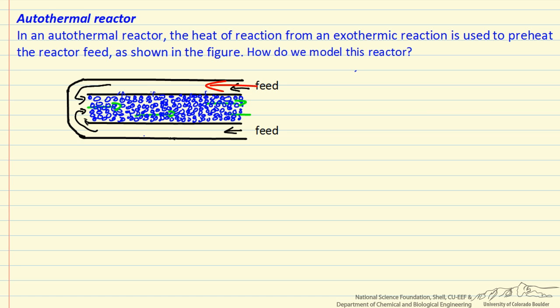The feed enters this annular region. As it moves through, heat of reaction is exchanged with the feed gas, so the gas at this point is being heated from the catalytic reaction, and then this gas enters the reactor much hotter than the initial feed temperature. Of course the rate of reaction is faster at the higher temperature. What we want to do is determine the conditions in the reactor and the exit temperature.